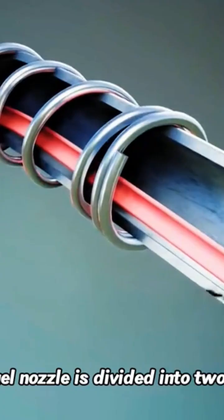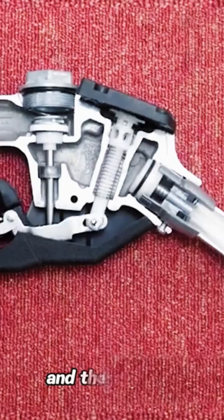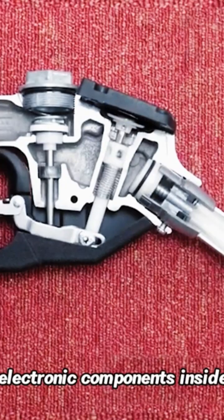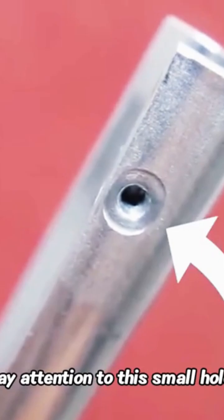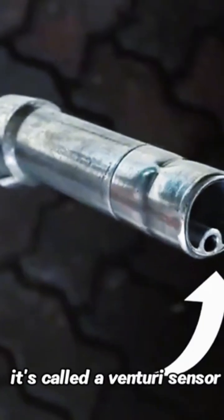In the picture, the fuel nozzle is divided into two parts and there are no electronic components inside. Pay attention to this small hole at the nozzle head. It's called a venturi sensor.